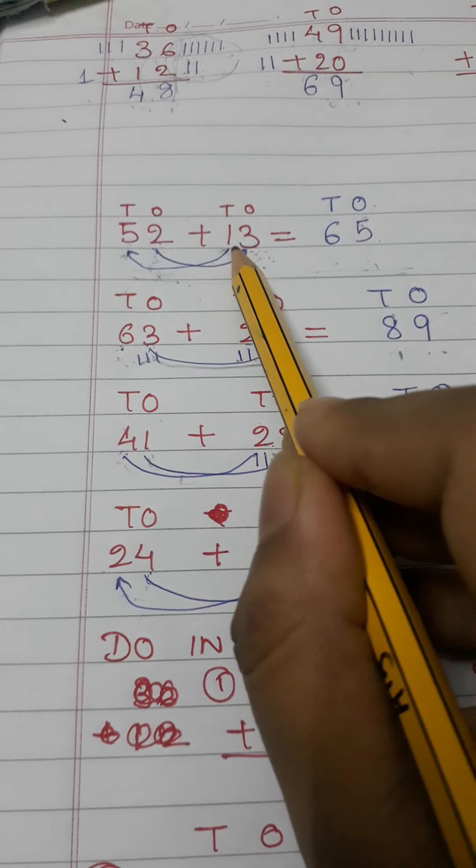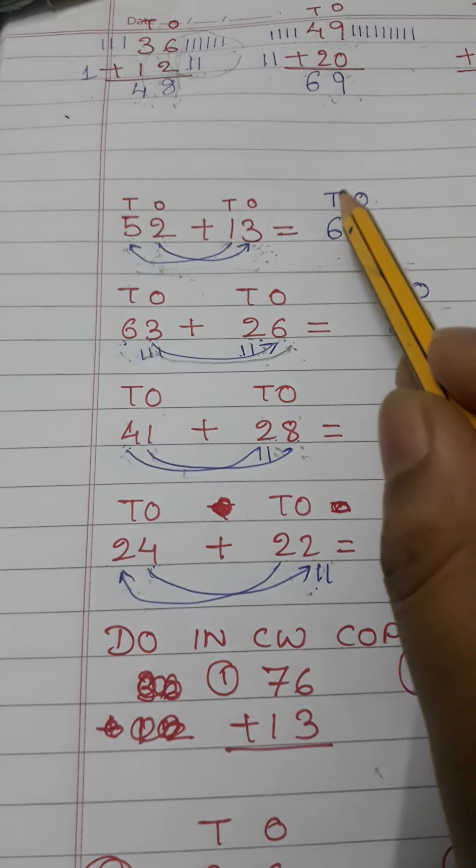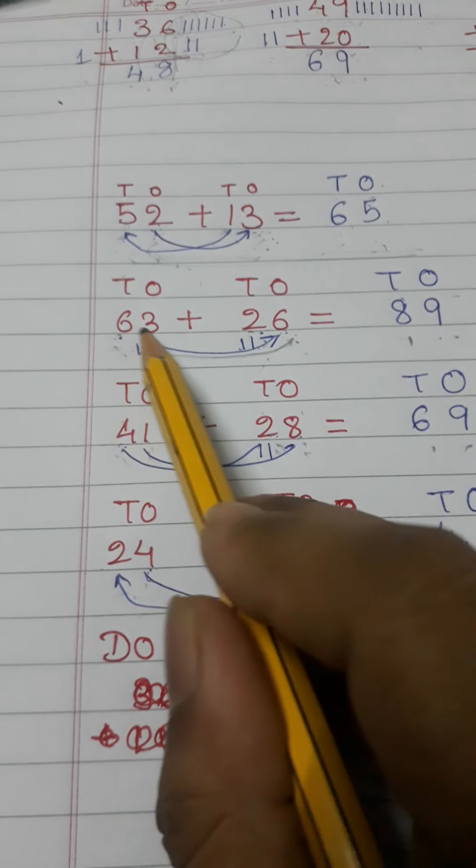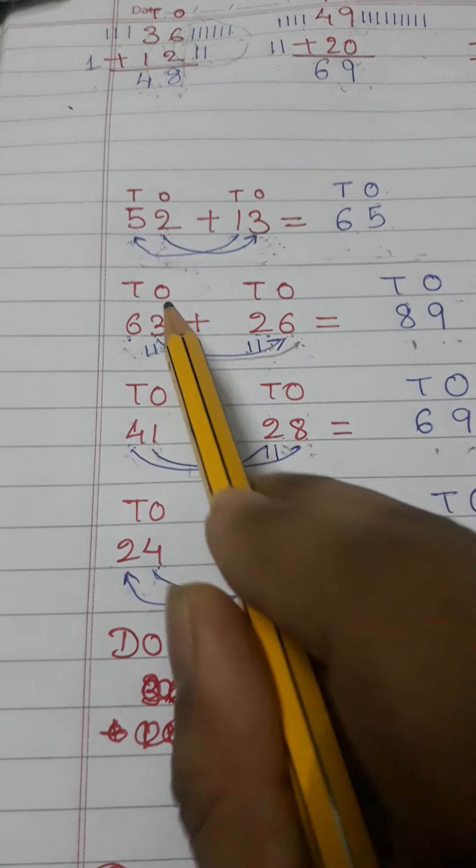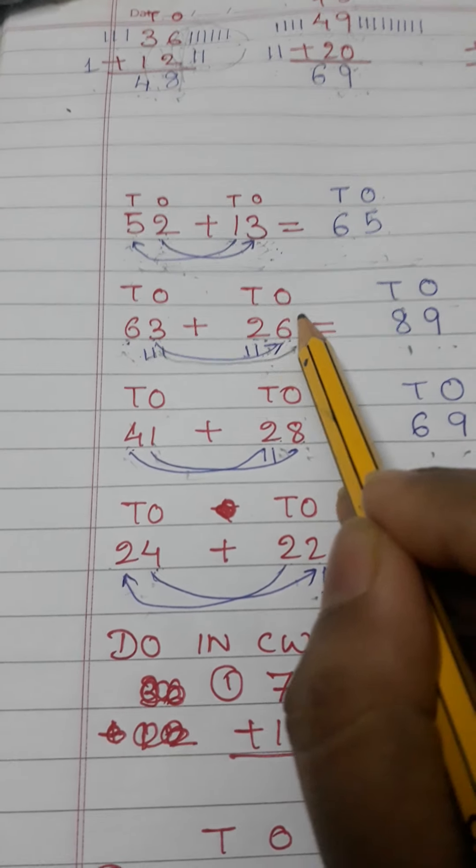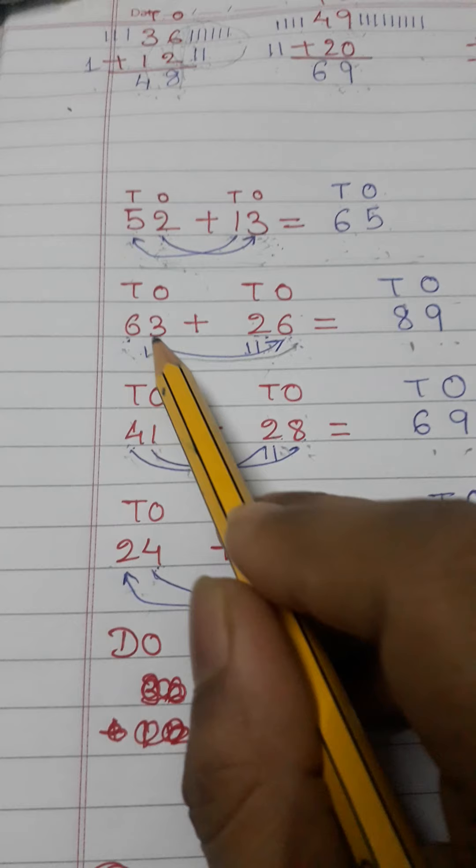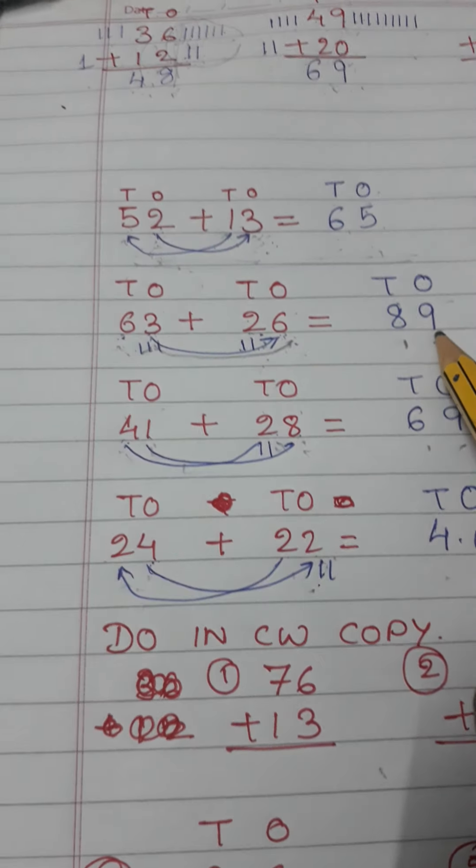Similarly here: sixty-three, twenty-six. Ones, tens. Ones, tens. First I will add the ones digit. Ones digit: six plus three makes nine. When I add ones digit I will write the answer in ones digit.